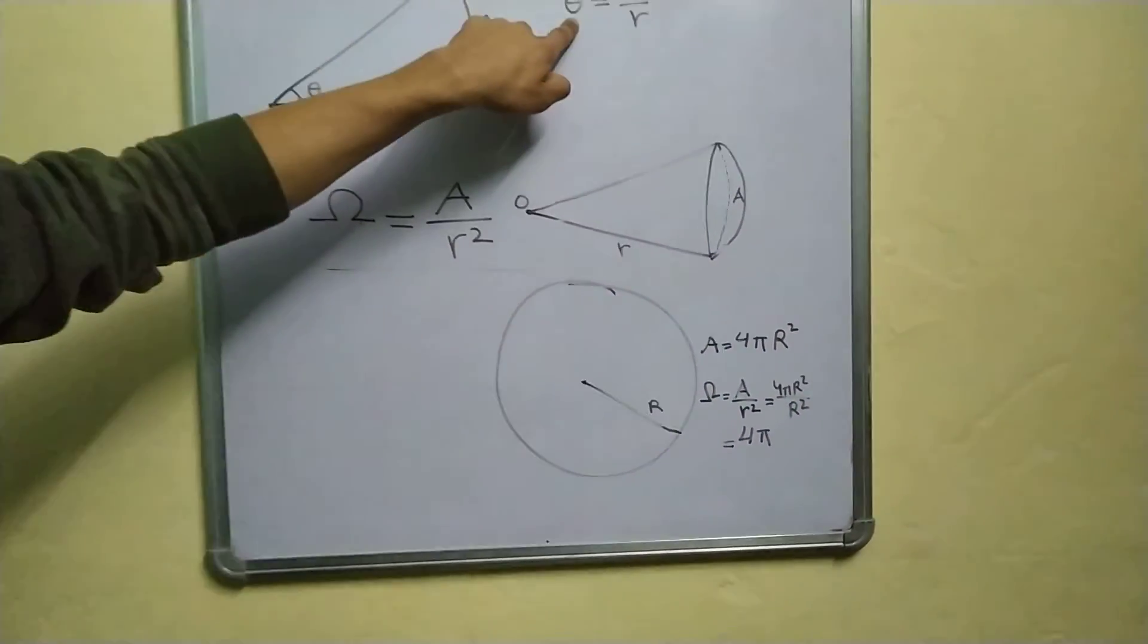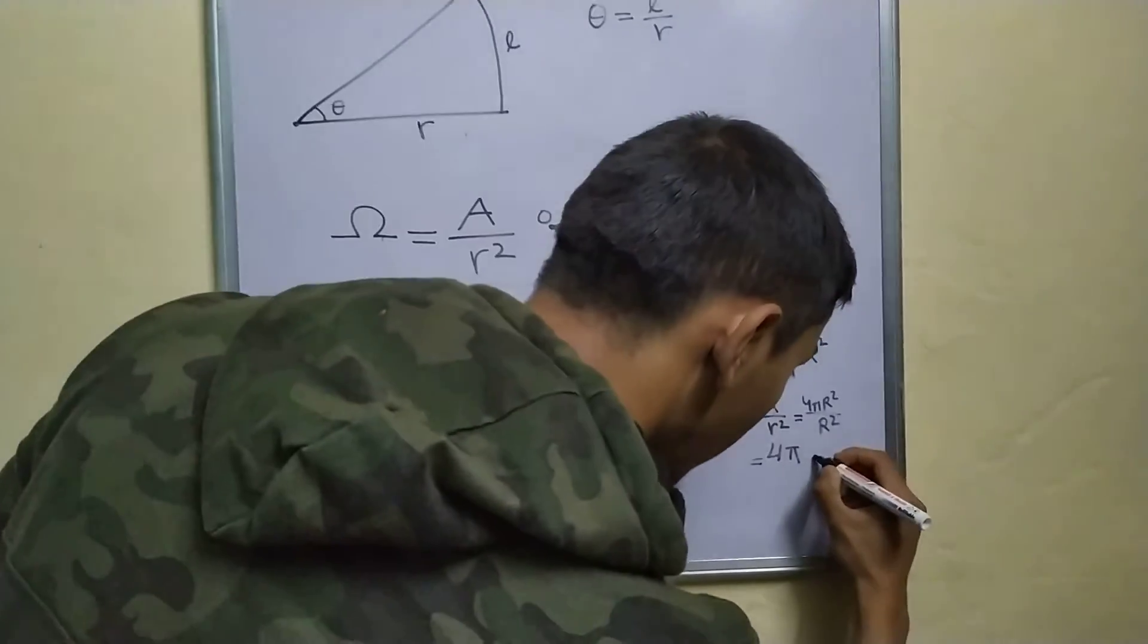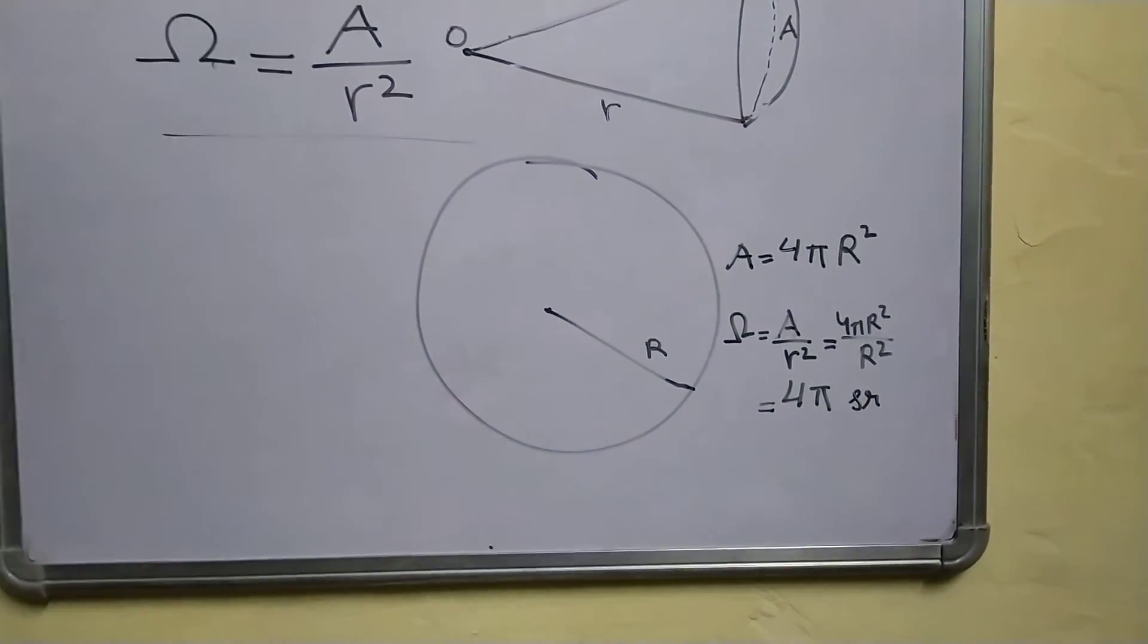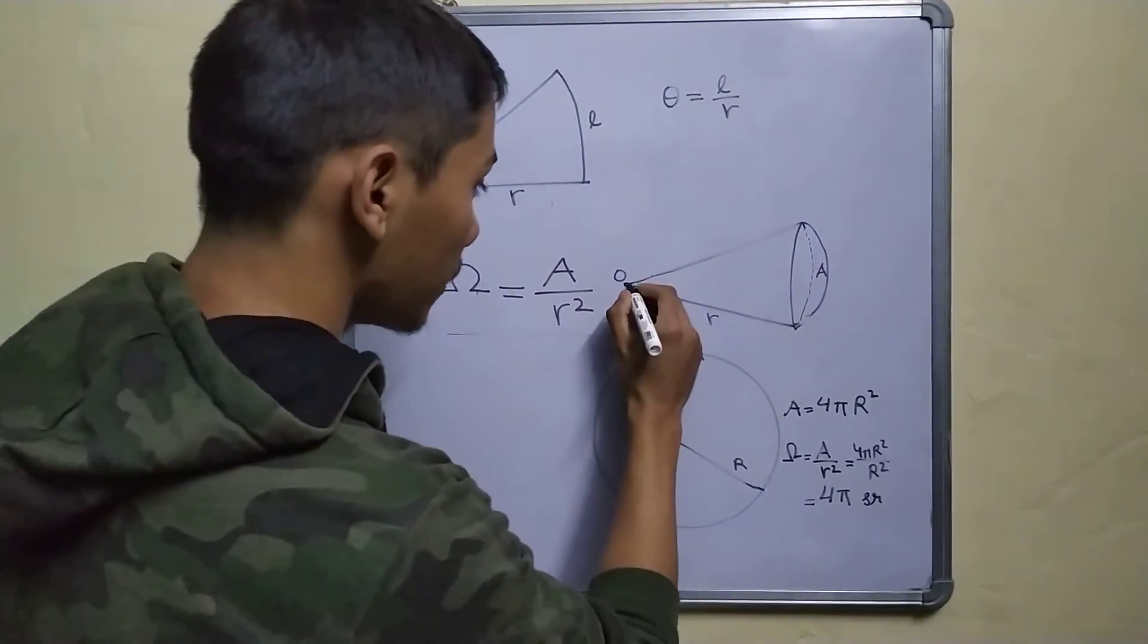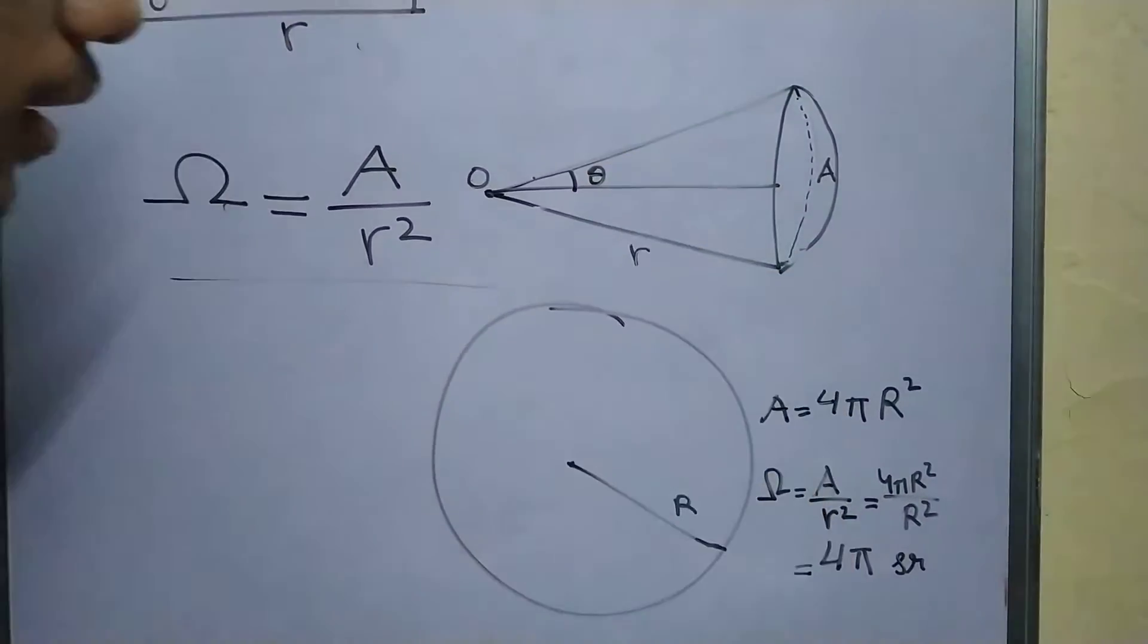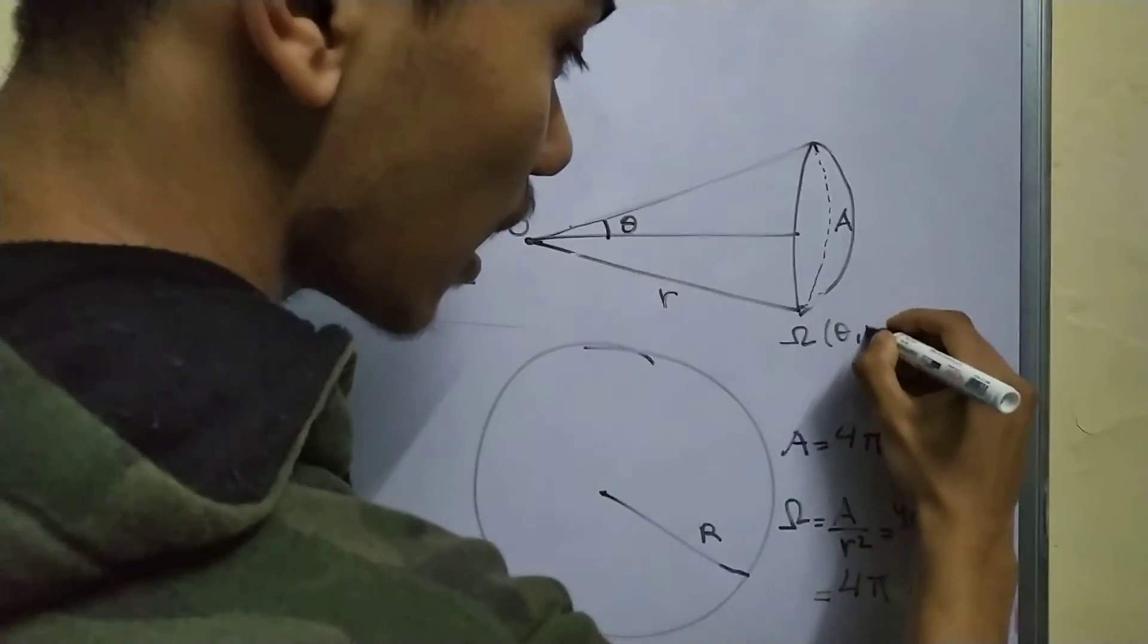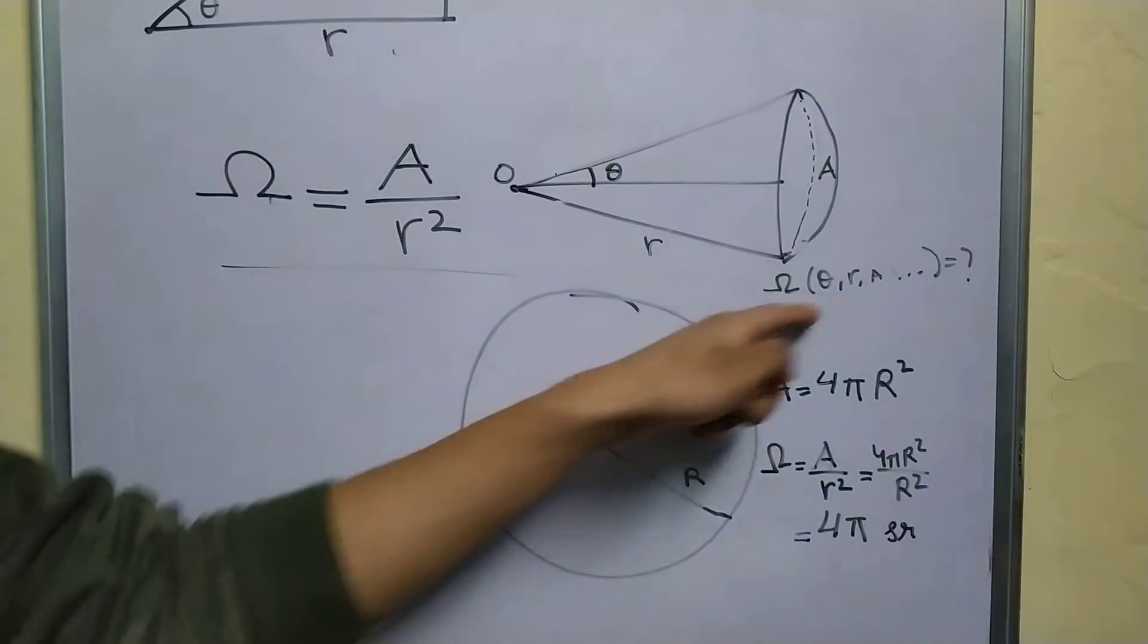This angle was measured in radians. Solid angle is measured in steridians, abbreviated as SR. Now, this was for a special case where we know the area. What about a general case? By which I mean, if you have, let's say this cone, and this is your semi-vertical angle theta. What is your solid angle in terms of theta, r, and whatever? Let's try to find out.